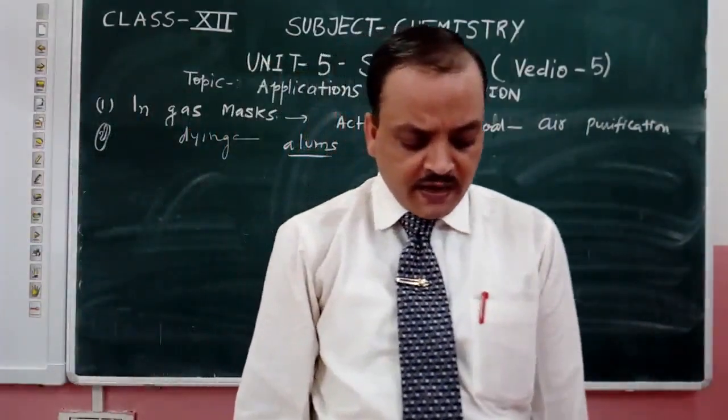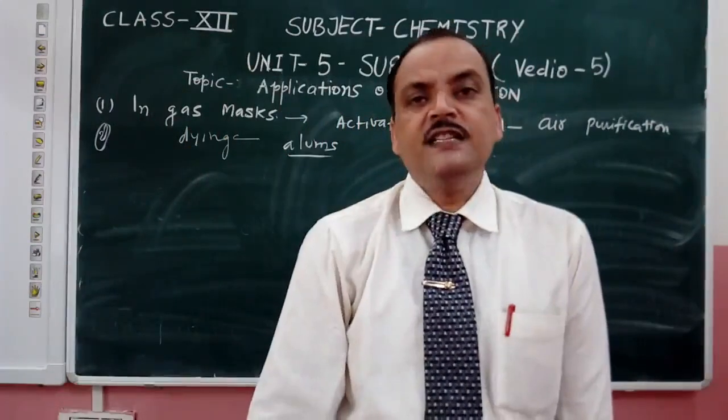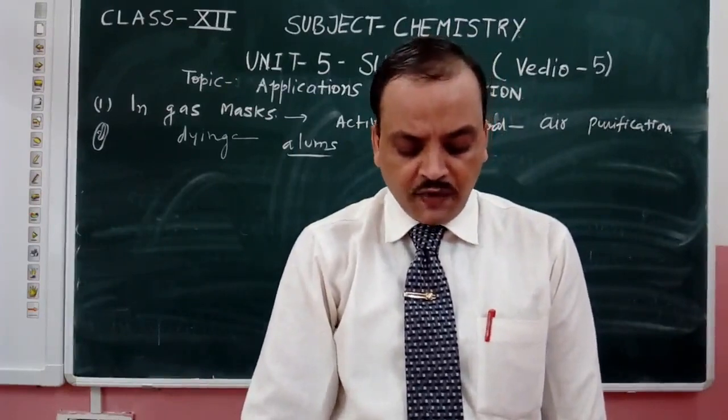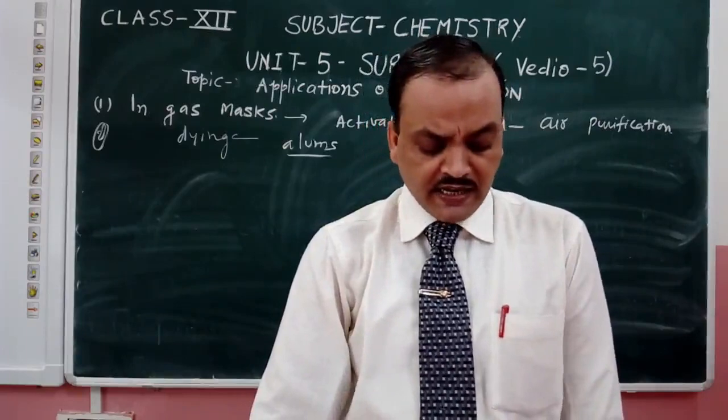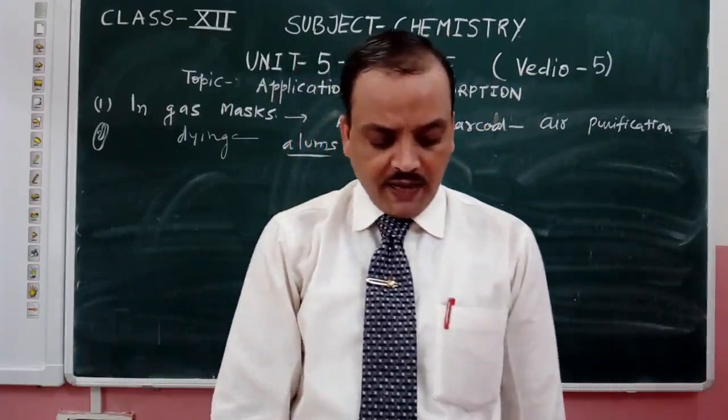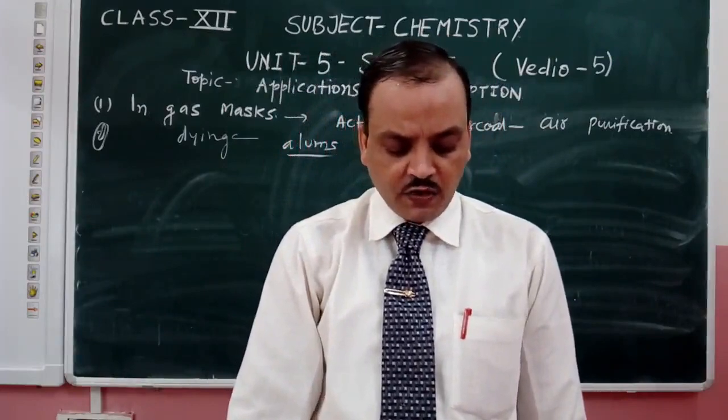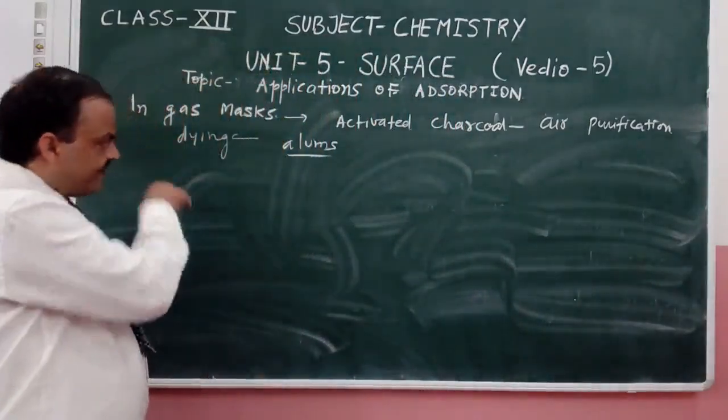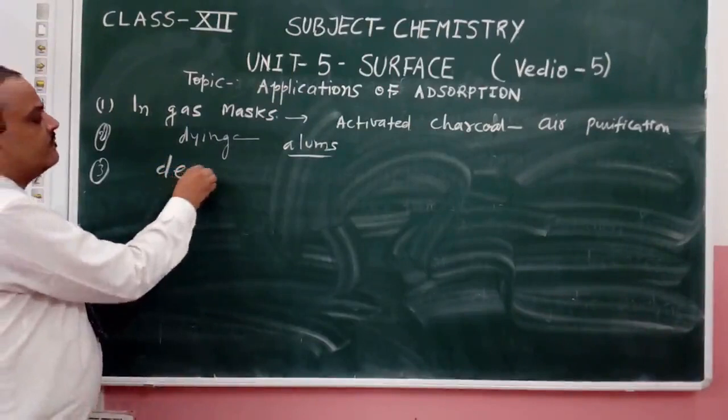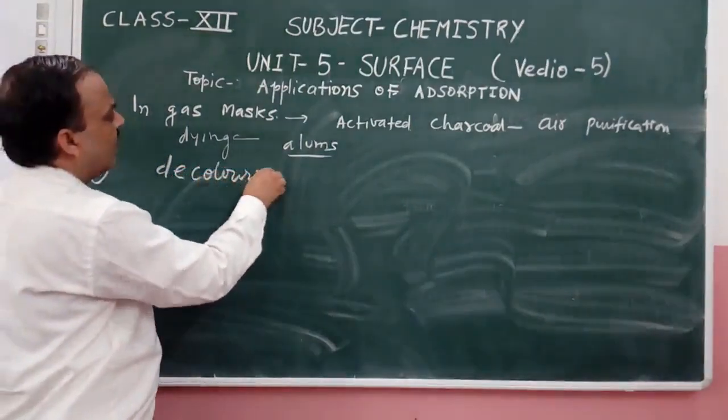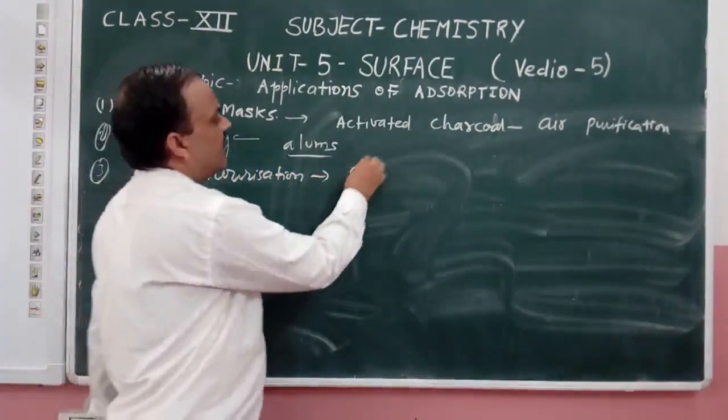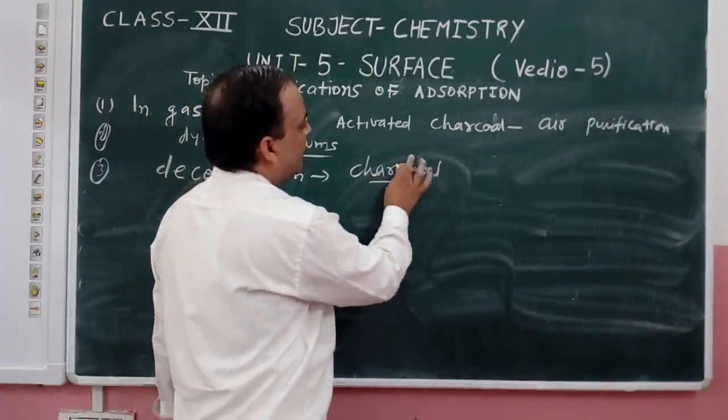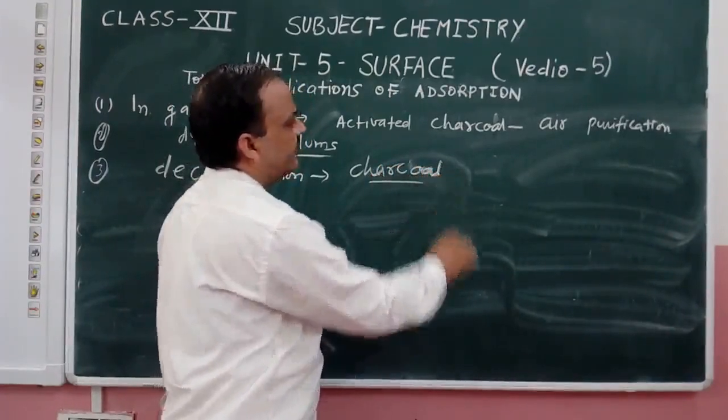Third: removal of coloring matter from solution. Many substances such as sugar, juice, and vegetable oils are colored due to presence of impurities. They can be decolorized by placing in contact with adsorbents like activated charcoal or fuller's earth. Decolorization of food materials is done by the process of activated charcoal.